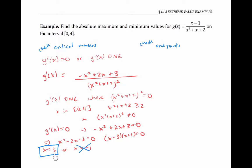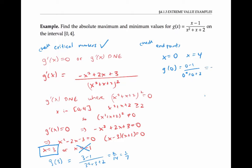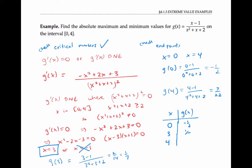x equals three is one place where g could have an absolute maximum or minimum. Plugging three in for x, that evaluates to 2/14, or one seventh. Now let's check the endpoints at x equals zero and x equals four. We get g of zero equals negative one half, and g of four equals three twentieths. I'll make a table: the candidate x values are zero, three, and four, with corresponding g of x values of negative one half, one seventh, and three twentieths.